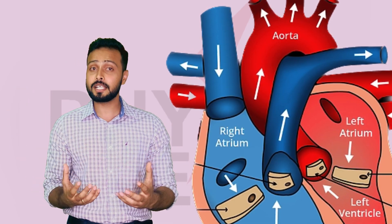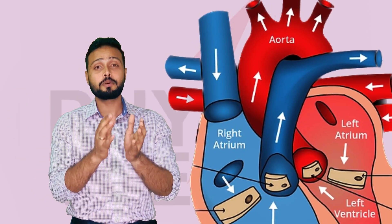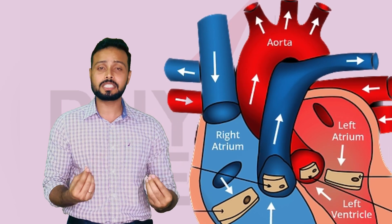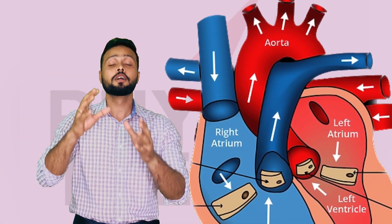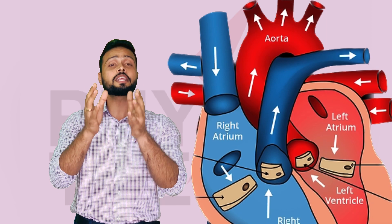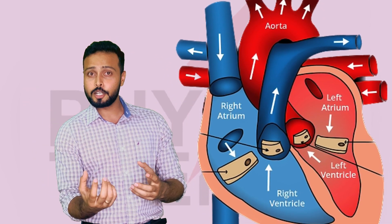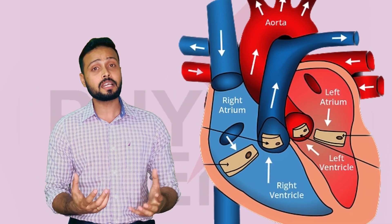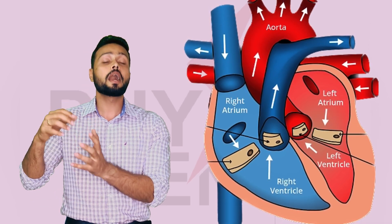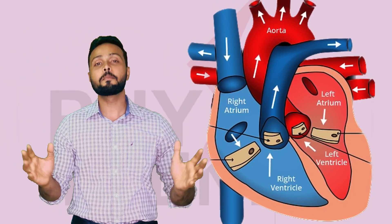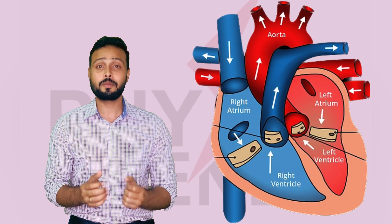The lungs purify this blood through oxygenation, and from there the pulmonary veins bring oxygenated fresh blood to the left atrium. From the left atrium, the bicuspid valve allows blood to enter the left ventricle, and from there it gets pumped through the aorta to the entire body. So this is the circulation I was talking about.